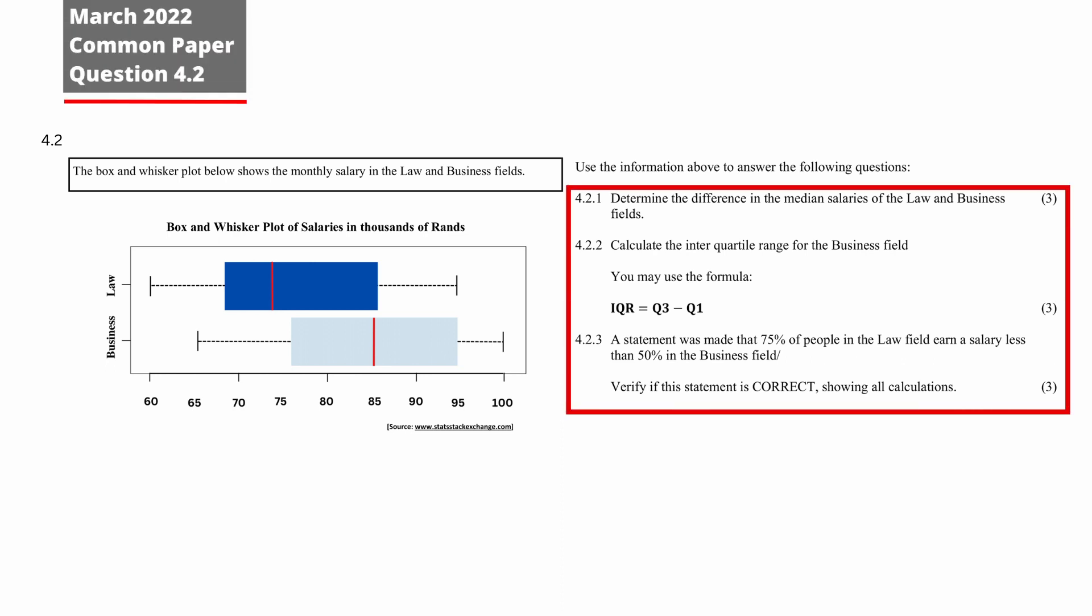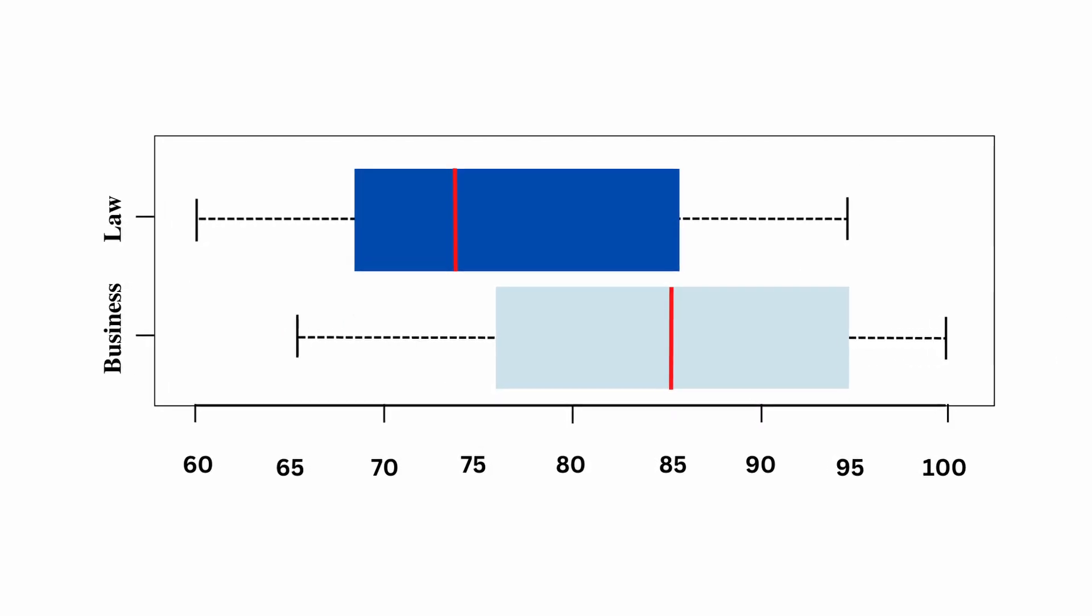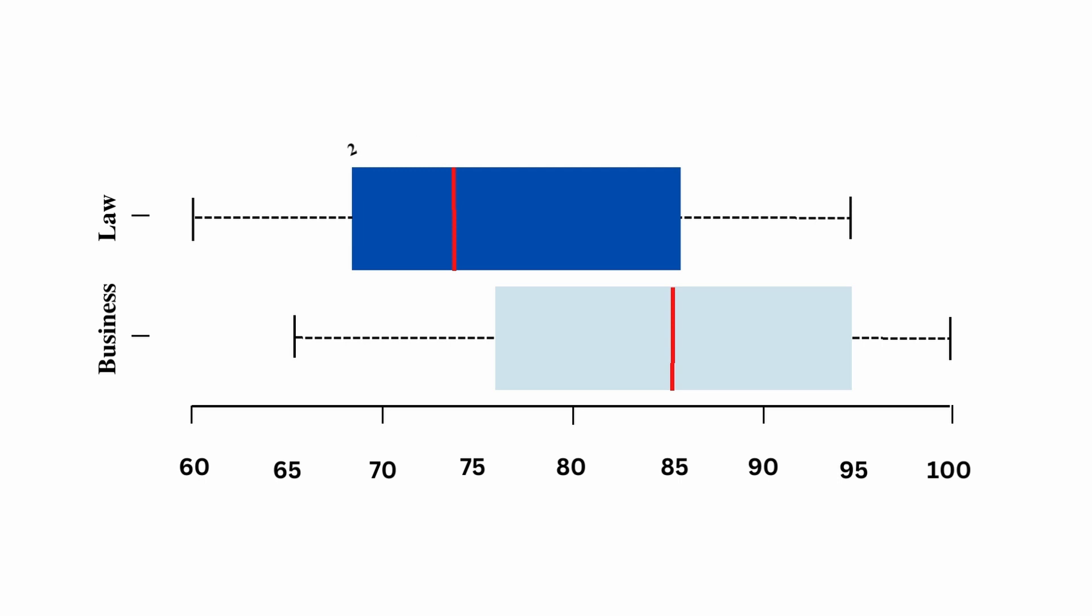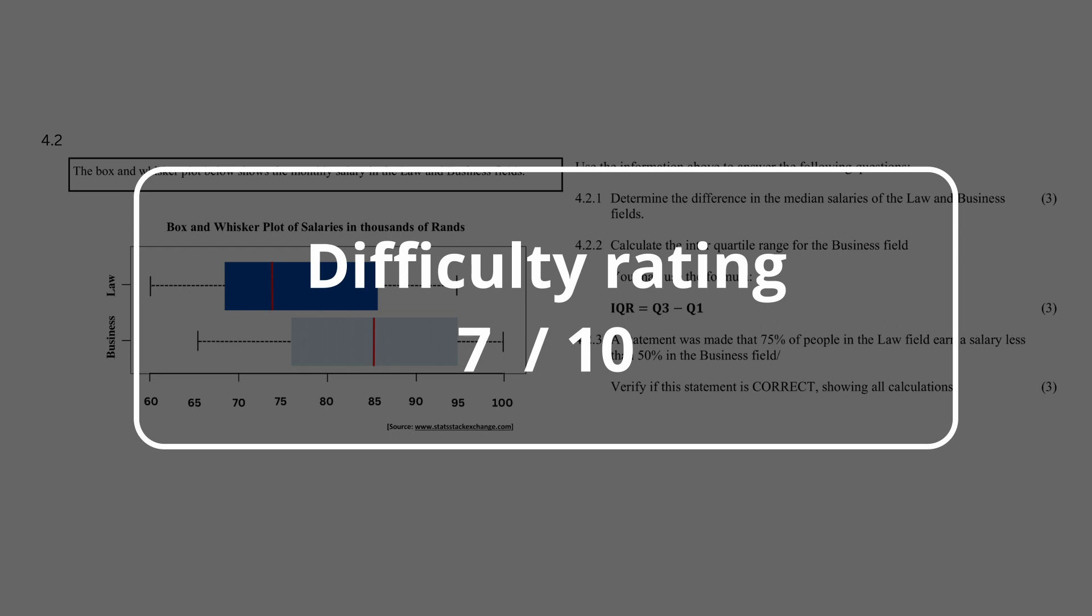Question 4.2 consists of three data handling questions designed to assist your understanding of box and whisker plots and the information they provide regarding the median, percentiles and interquartile range. I give this question an overall difficulty rating of 7 out of 10.